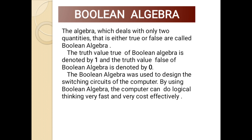Boolean algebra is the algebra which deals with only two quantities, that is either true or false. The values of the variables — when true, it is denoted by 1, and when false it is denoted by 0. So in Boolean algebra we use only two quantities: 0 and 1.